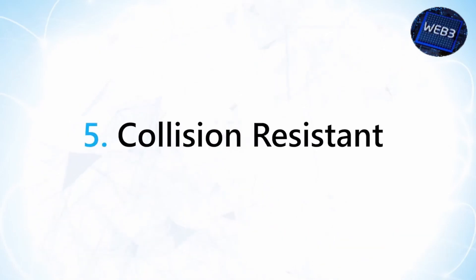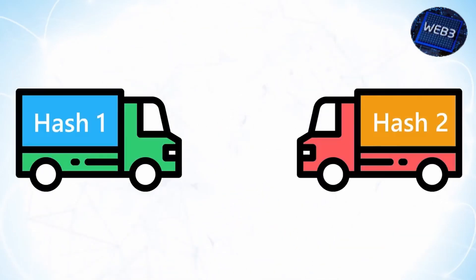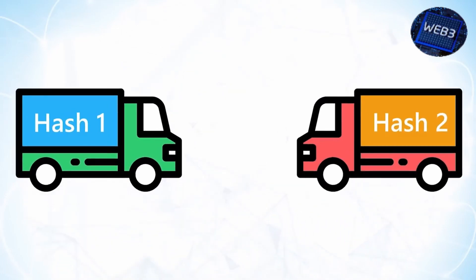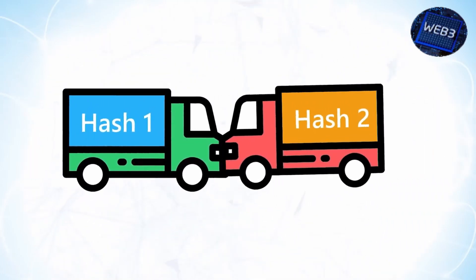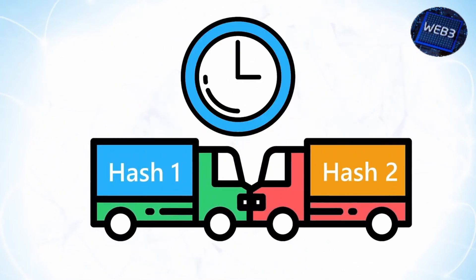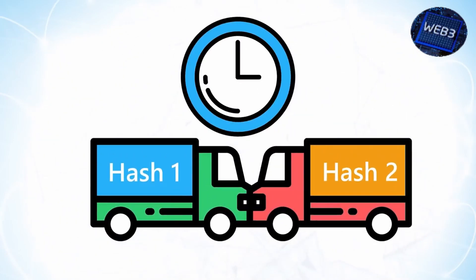Property 5 – Collision Resistant. Collision resistance means that each input will have its own unique hash. Having two different inputs that result in the same hash is known as a collision. No hash function is completely collision-free, but much like the timeline of the brute force attack described before, it takes so long that it doesn't matter.